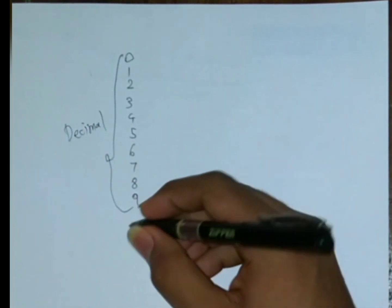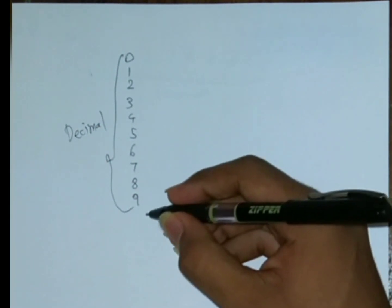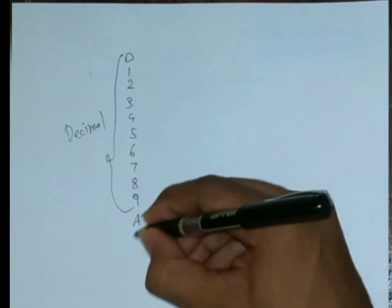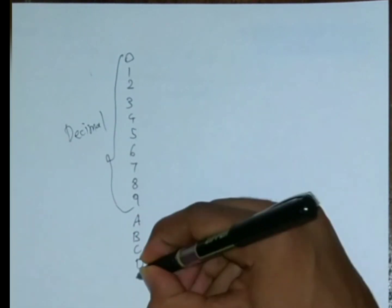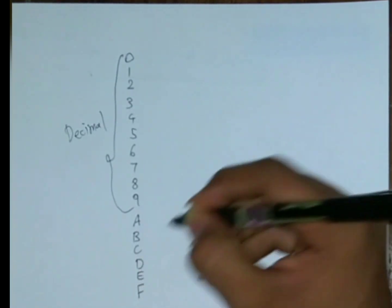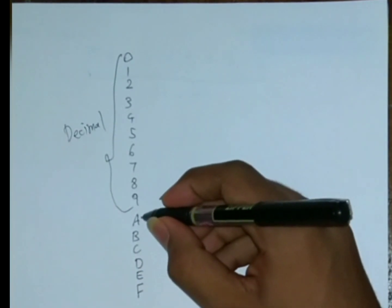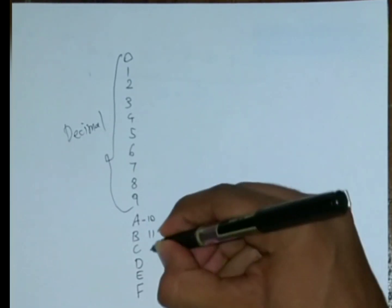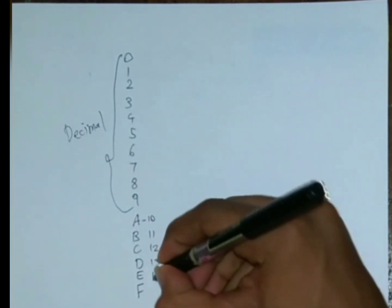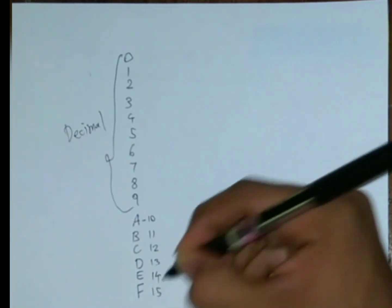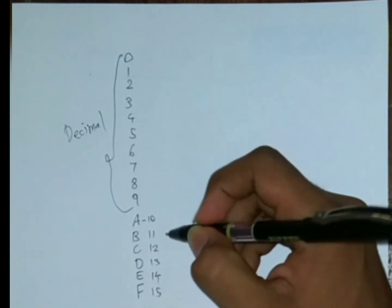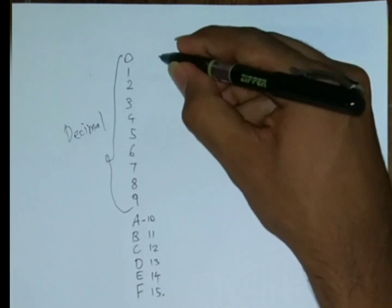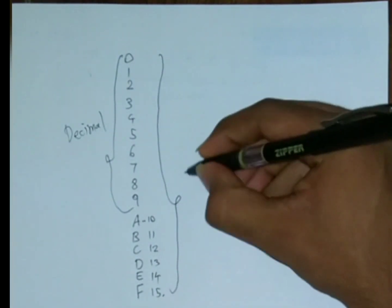But if you add six more digits to it — A, B, C, D, E, and F — so A is gonna be 10, 11, 12, 13, 14, and 15 is F. So all of this is gonna make the hexadecimal system.